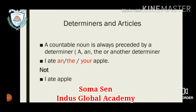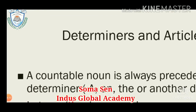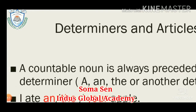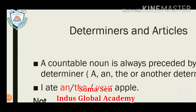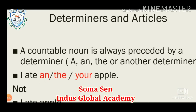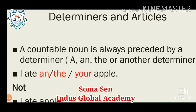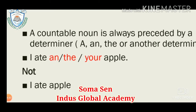Now comes another important focus point: determiners and articles. A countable noun is always preceded by a determiner like 'a,' 'the,' or another determiner. For example: 'I ate an apple,' 'I ate the apple,' or 'I ate your apple.' We cannot write 'I ate apple' — something is missing, so we must insert the right determiner.